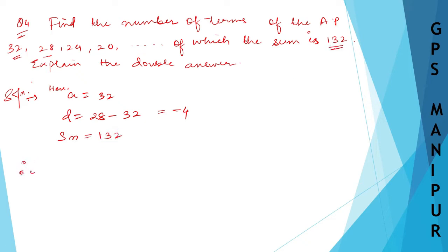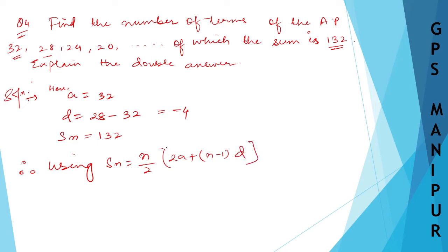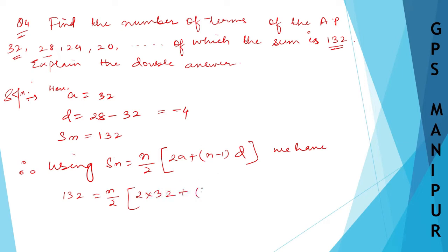Therefore, using the formula Sn = n/2 * (2a + (n-1)d), we substitute: 132 = n/2 * (2×32 + (n-1)×(-4)).